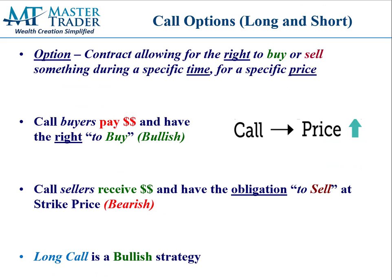But what is an option? It's a contract allowing for the right to buy or sell the underlying stock at a specific time for an agreed-upon price. Call buyers pay money and have the right to buy the stock — that's bullish. Call sellers receive that money and have the obligation to sell the stock at the agreed strike price — that's bearish, and we'll discuss that in a different video.